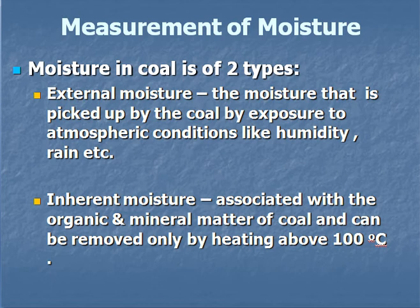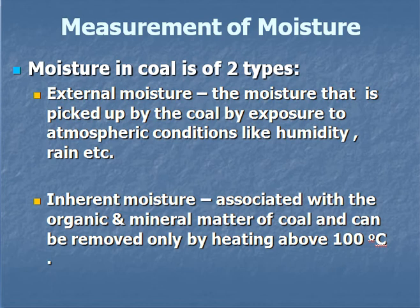There are two kinds of moisture in coal. External moisture is picked up by coal through exposure to the atmosphere — for example, rainwater in the open coal yard. Inherent moisture is the moisture chemically associated with the structure of the coal. When we refer to moisture percentage in proximate analysis, we refer only to inherent moisture. The coal is air-dried first to remove external moisture, because only the inherent moisture affects the useful heat available in the furnace.